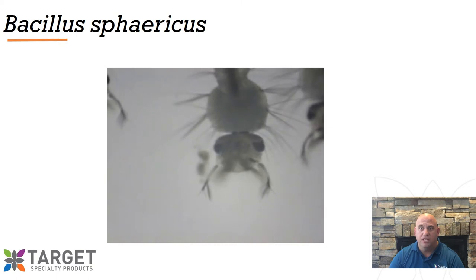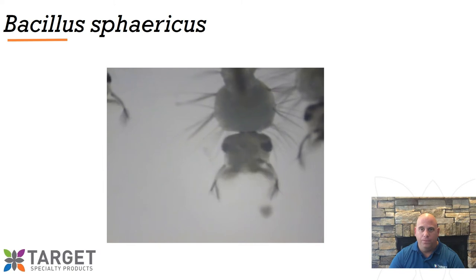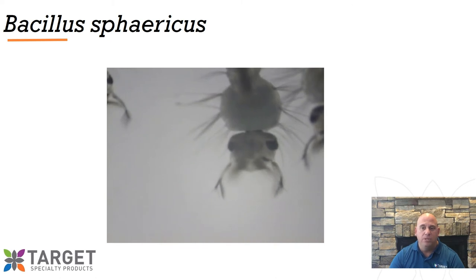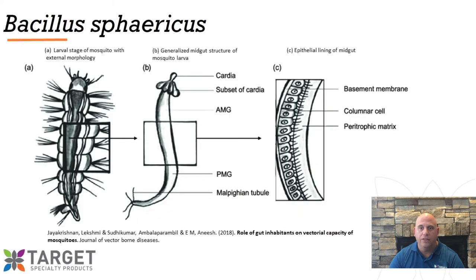Mosquito larvae must ingest these crystals that contain the two proteins in order for the toxic effect to happen. Once ingested, these toxins are solubilized in the alkaline mid-gut and bind to specific receptors of the epithelial cells of the mid-gut — the outer layers of the cells of the digestive tract. This binding of the toxins causes pores to develop in the lining of the digestive tract of the larvae, resulting in osmotic imbalance, lysis of the cells, or a rupture of the cells.